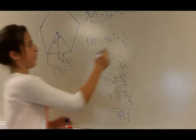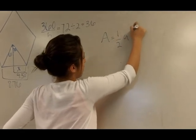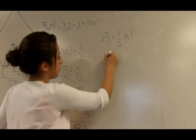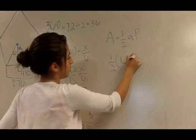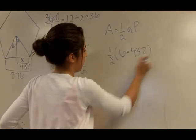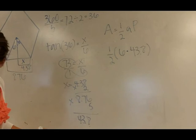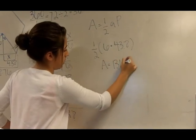And then you have to find the area. So area equals one-half, and that's one-half, 6 times 43.8. And that is 131.4.